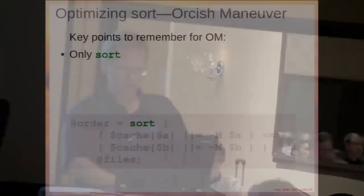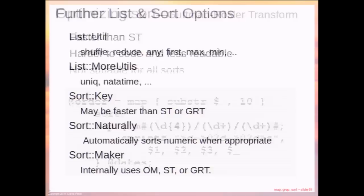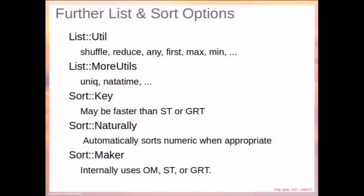I'm about out of time, so let me skip past the optimization material. There are further options including list utilities and more utilities — there's a lot of stuff out there for sorting and a lot of optimizations available. There's the Schwartzian Transform, the Orcish Maneuver, the Gutmann-Rossler, and a lot of other fun stuff. That's it for the presentation. Thank you — if you want to stick around and ask a few questions, that would be great.